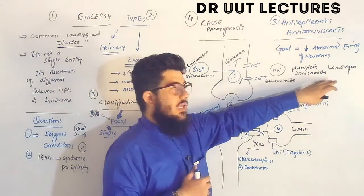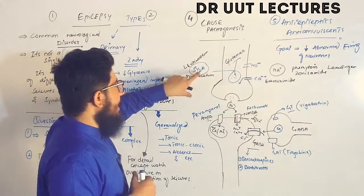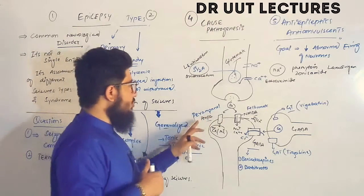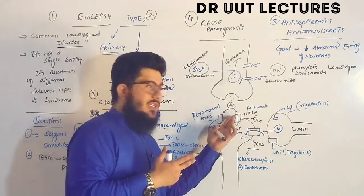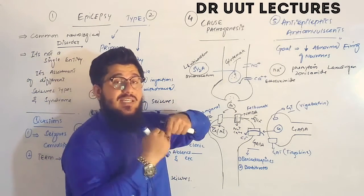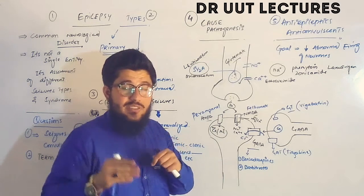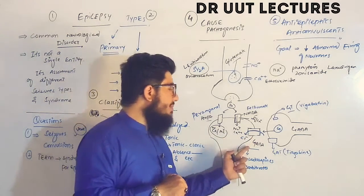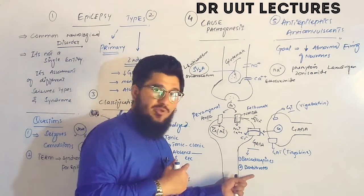For the SV2A transporter, two drugs are used: levetiracetam and brivaracetam. To block the AMPA receptor, perampanel is used; to block the NMDA receptor, felbamate is used. When these receptors are blocked, there is no influx of positive ions, the cell does not depolarize, and the neuronal signal is not propagated — or is propagated very slowly, meaning neuronal activity is decreased. GABA mimetics that increase GABA activity include benzodiazepines and barbiturates.